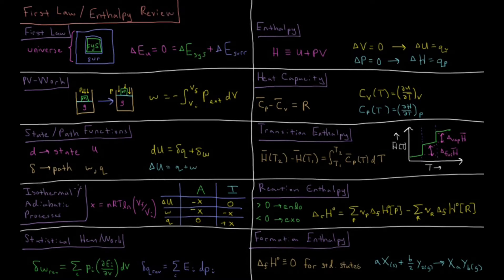We can look at heat and work in isothermal and adiabatic processes. This value X here, which I'm defining in this table, is equal to number of moles times gas constant times temperature times natural log of the final volume divided by the initial volume of our system during whatever expansion or compression event we had.